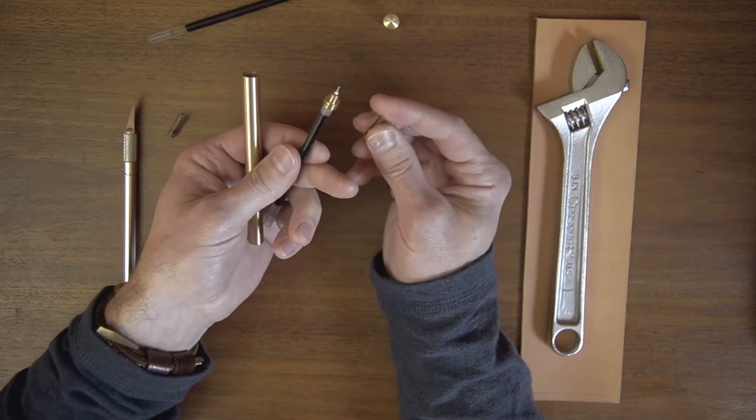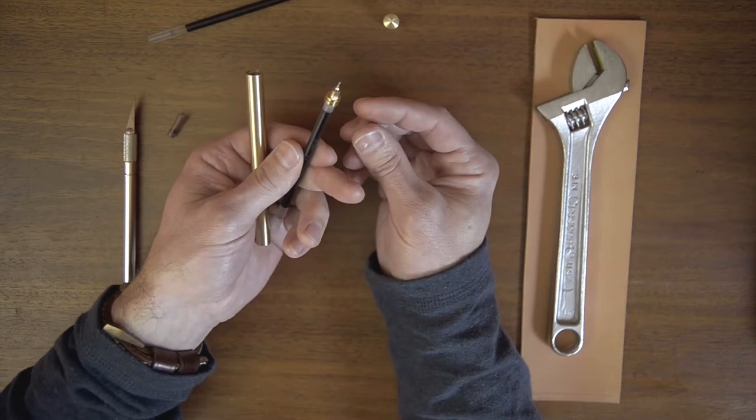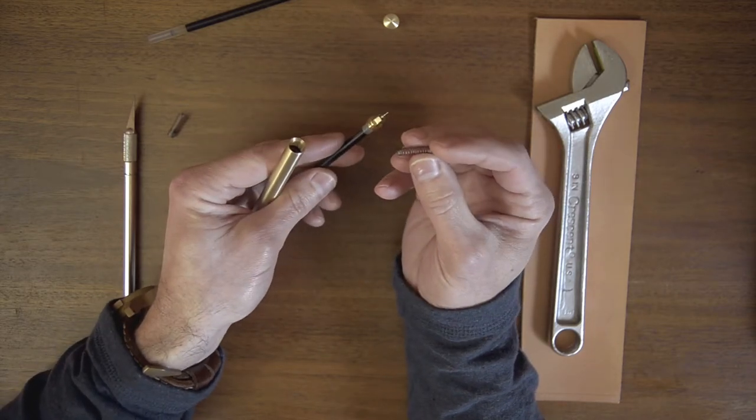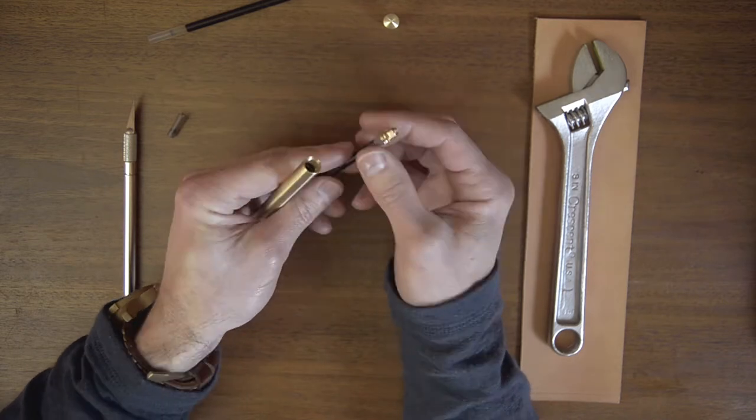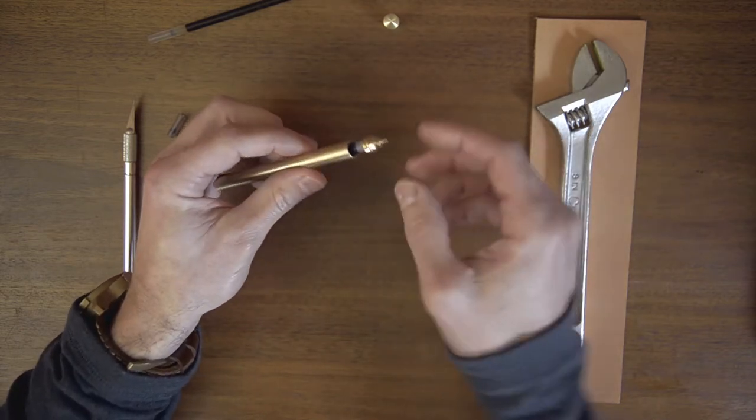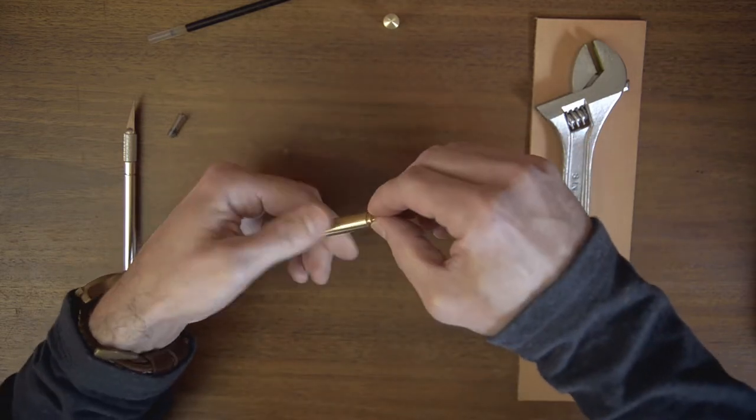But with those flutes shaved down, the threaded insert fits on nice and easy. We'll put the spring back inside the body and slide that new cartridge in.